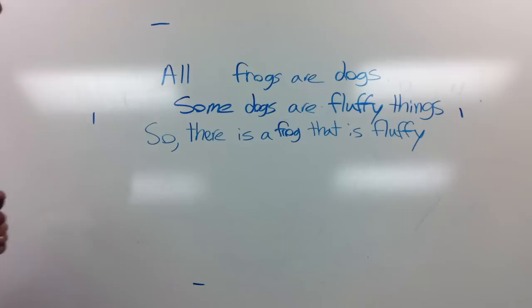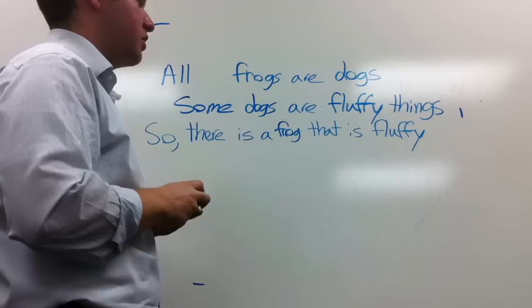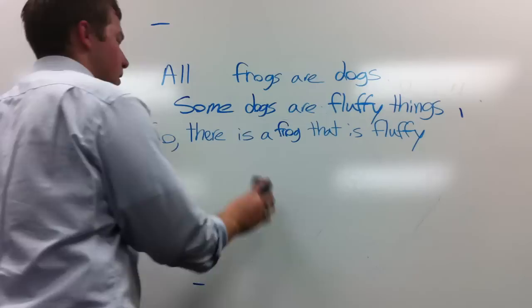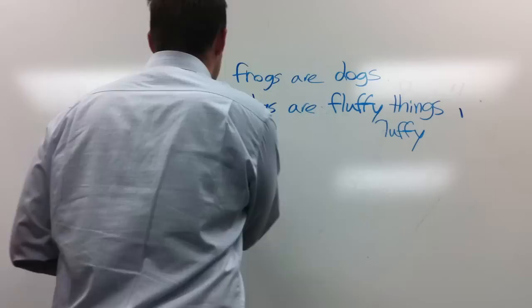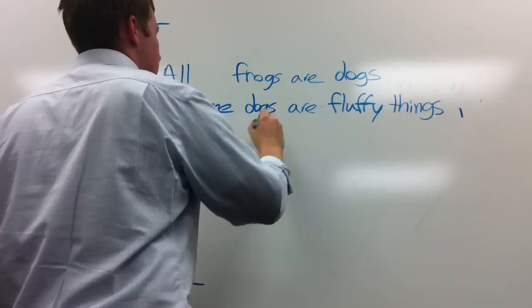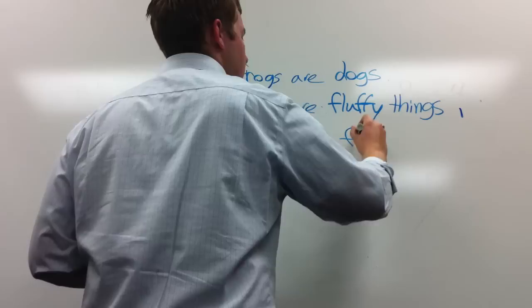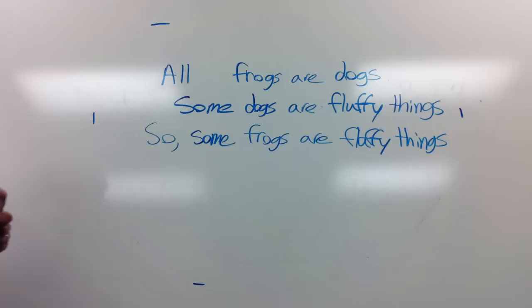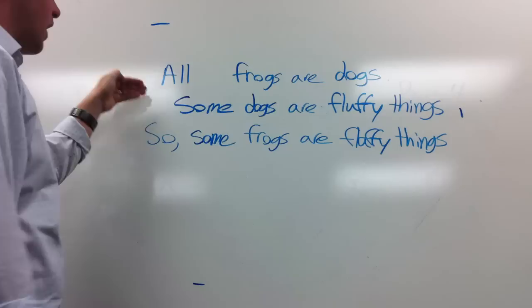Last one: 'there is a frog that is fluffy.' Think about what that means — you can use process of elimination again. It's pretty much the same type of statement; it's our conclusion. So instead of 'there is a frog that is fluffy,' we say: 'Some frogs are fluffy things.' Don't forget the plural noun phrase — 'fluffy things.' That completes the first part: putting all statements into their primary A, E, I, or O form.